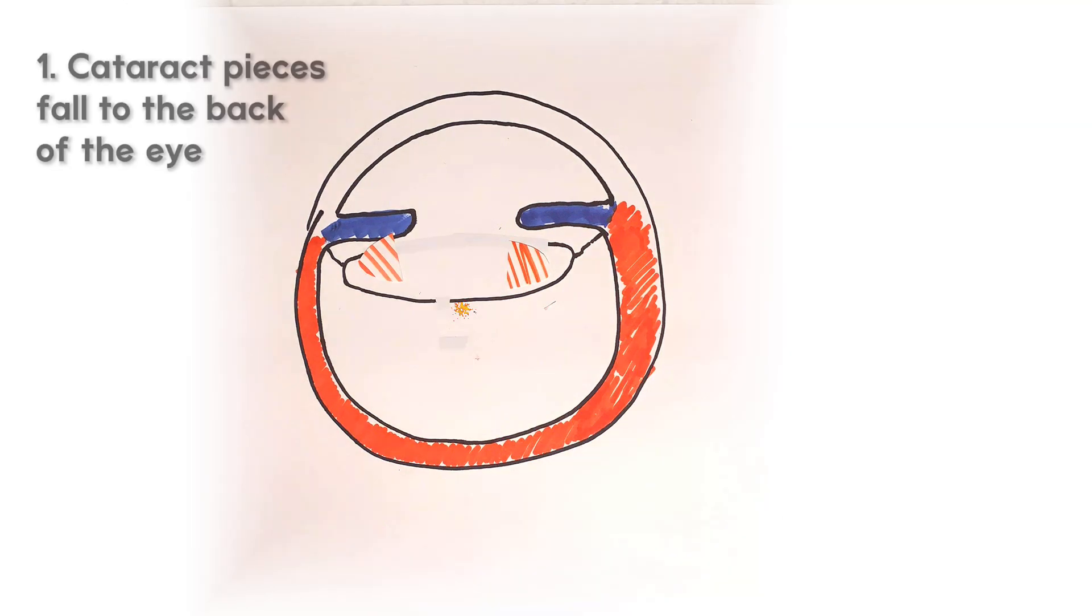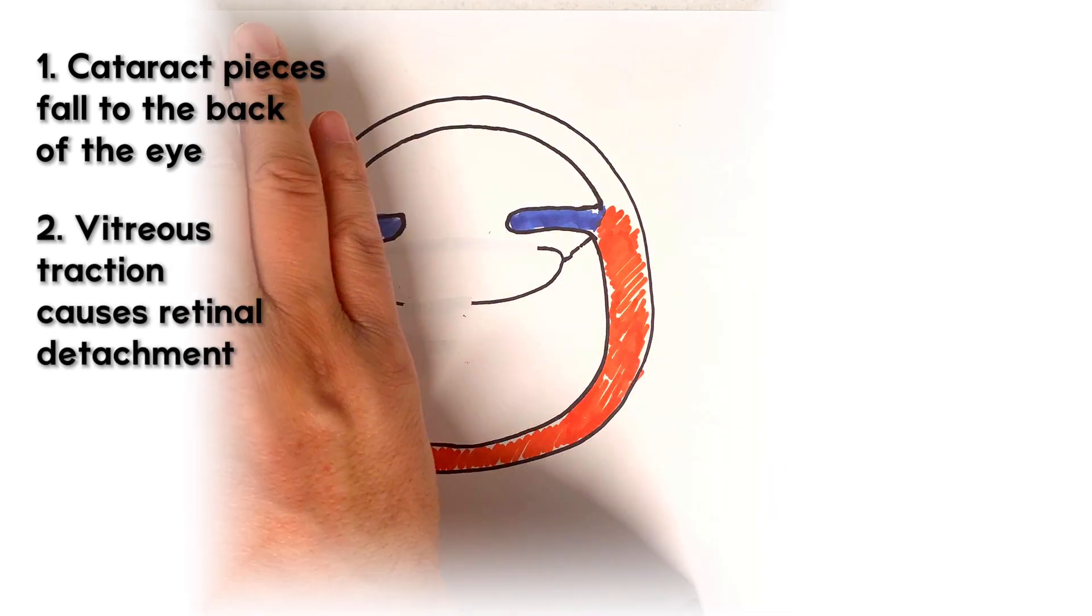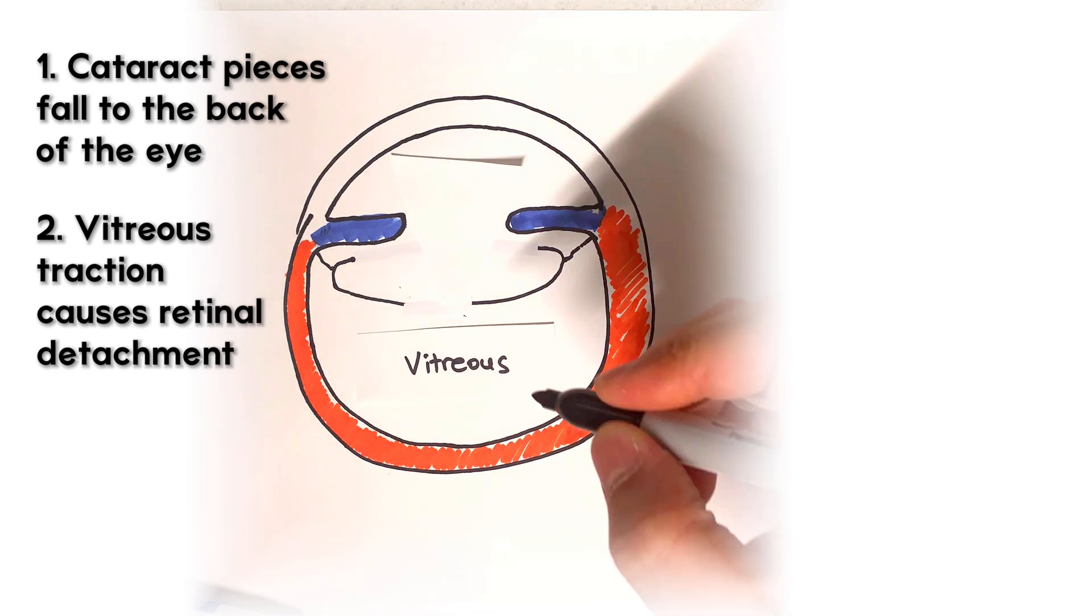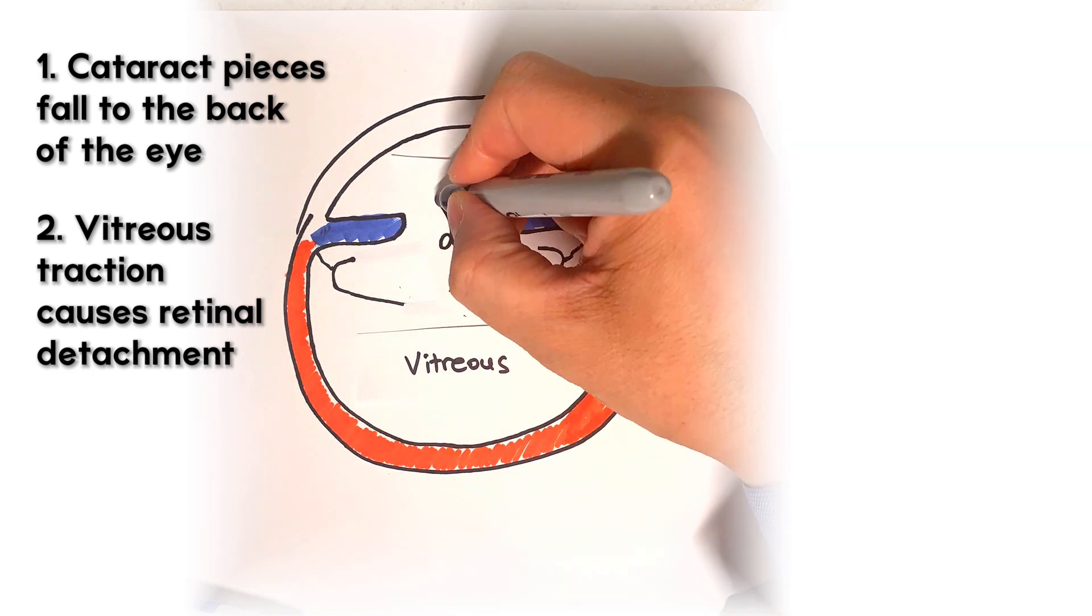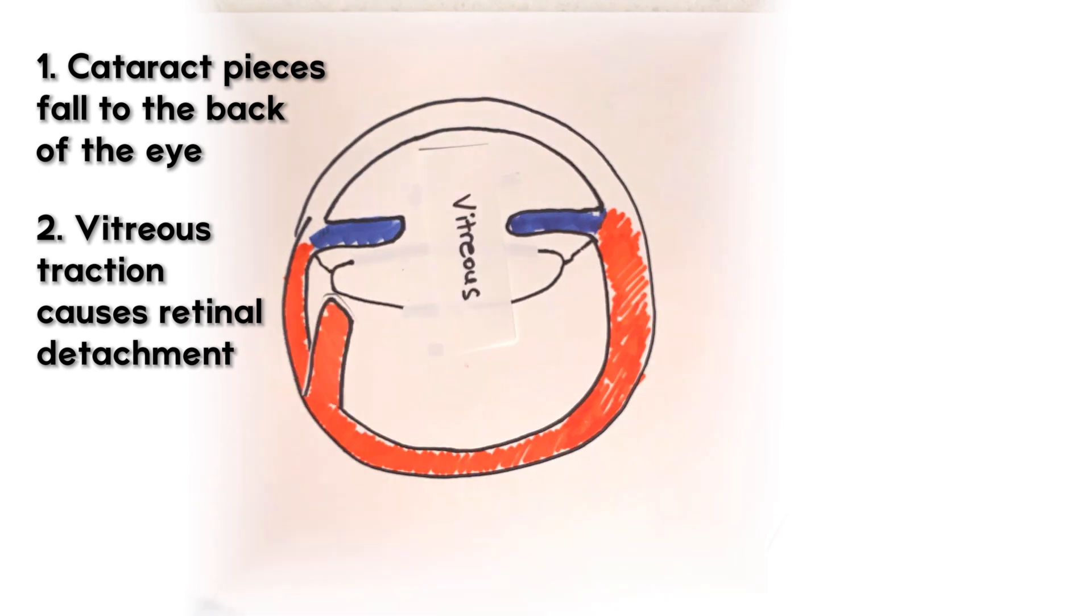One, pieces of cataract fragments can fall to the back of the eye near the retina. Two, the clear vitreous or jello substance in the center of the eye can pull forward, and as it does this it can rip or tear the retina in the process, causing detachment.